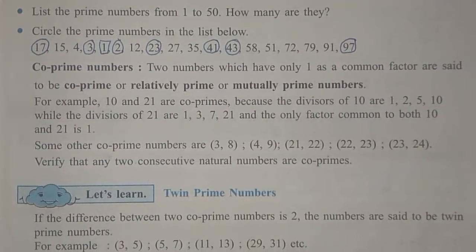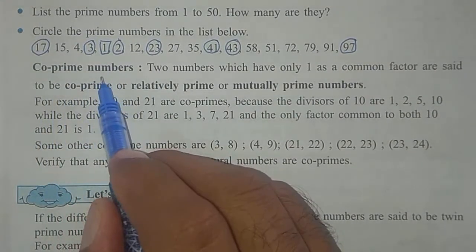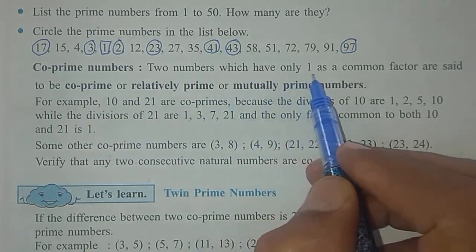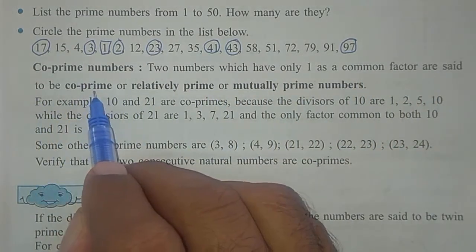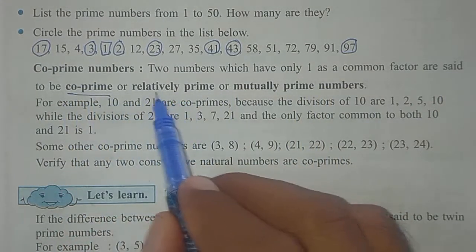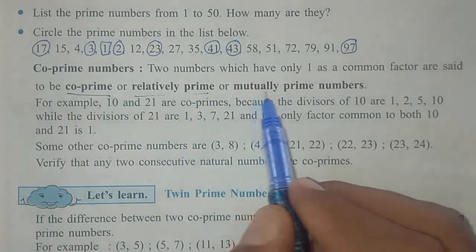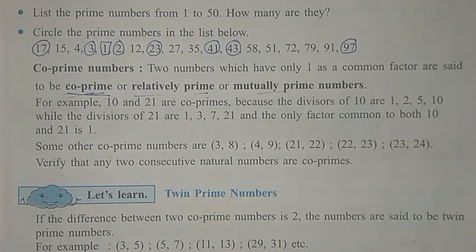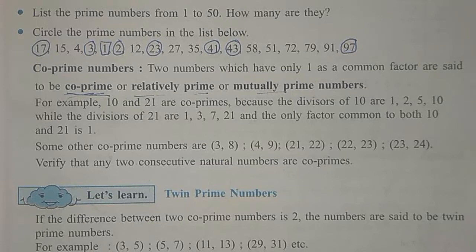Co-prime numbers — this we have also learned in the 5th standard scholarship syllabus. What is the meaning of co-prime numbers? Two numbers which have only 1 as a common factor are said to be co-prime, or relatively prime, or mutually prime. These are three names for the same concept, but normally the word used is co-prime.